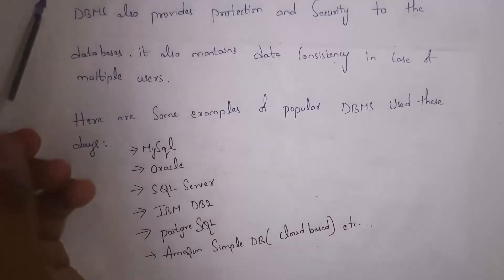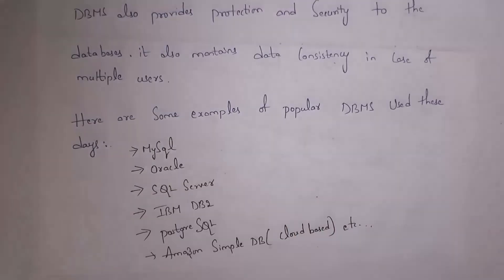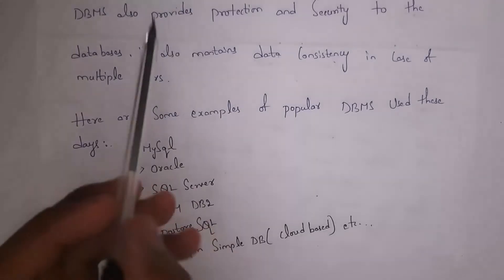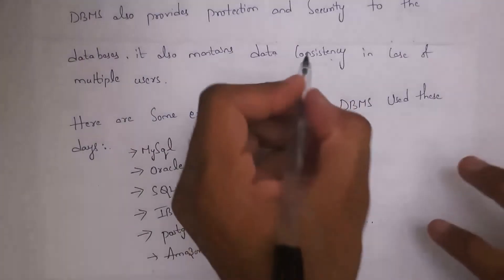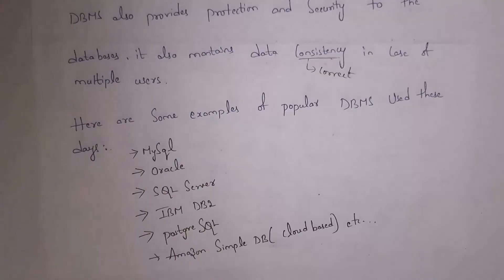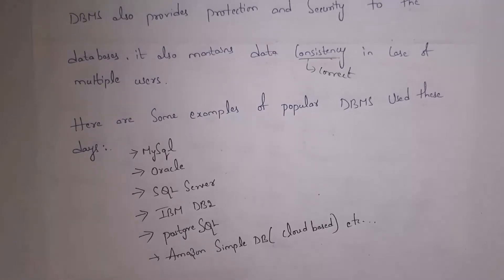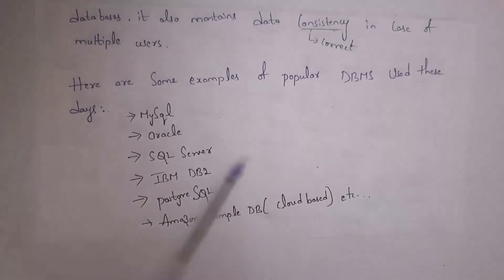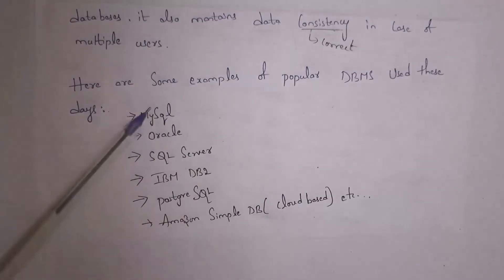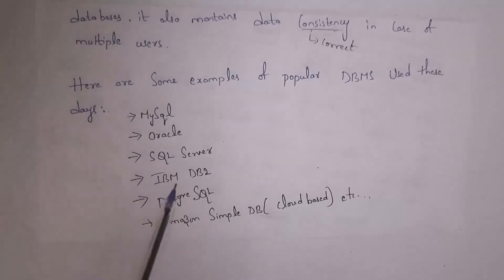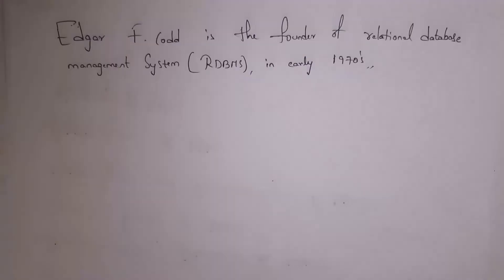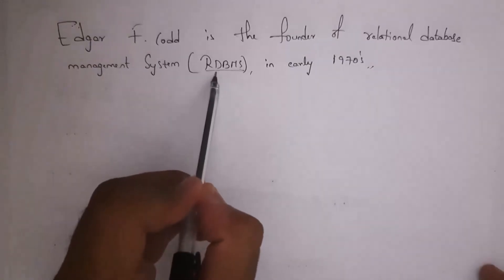DBMS also provides protection and security — we can keep a password so only users with the password can access the database. It also maintains data consistency in case of multiple users, meaning data will be correct even when multiple users access the same database simultaneously. Examples of popular DBMS software include MySQL, Oracle, SQL Server, IBM DB2, PostgreSQL, and Amazon SimpleDB. Edgar F. Codd is the founder of the Relational Database Management System, in the early 1970s.